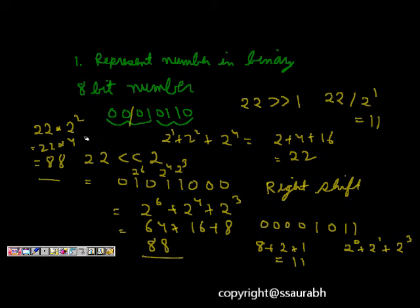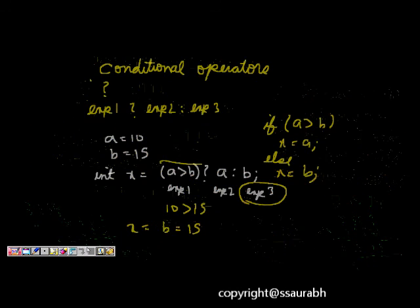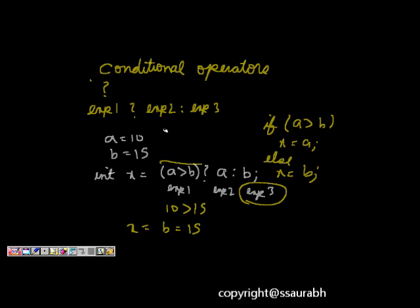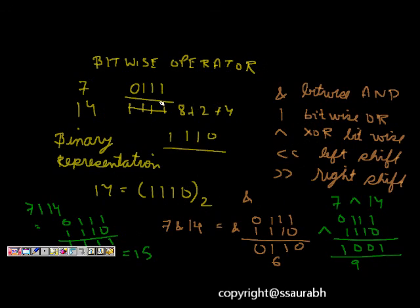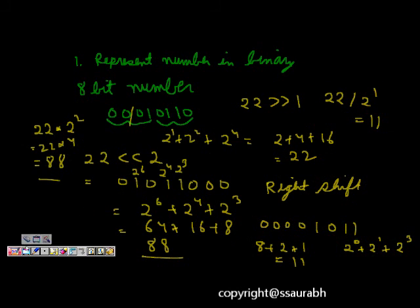This was about the bitwise operators. We will end our lecture here. In this lecture we learnt about: first, conditional operators, where if an expression is true the first result is taken, otherwise the second. Then we saw bitwise operators — AND, OR, XOR, left shift, and right shift — with some examples.